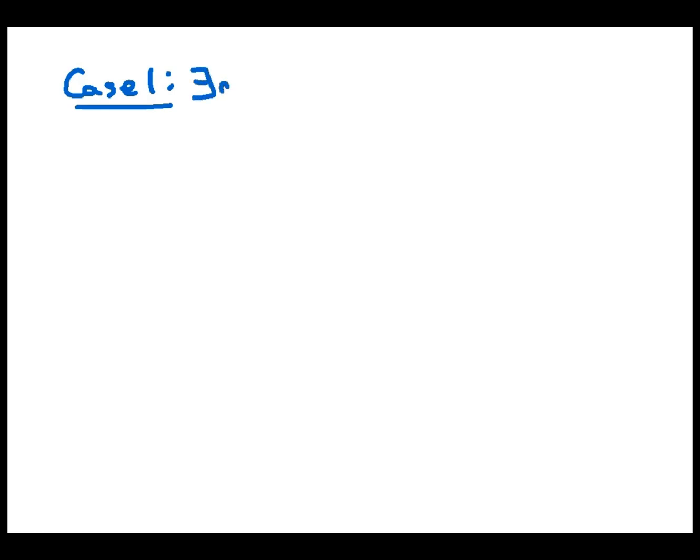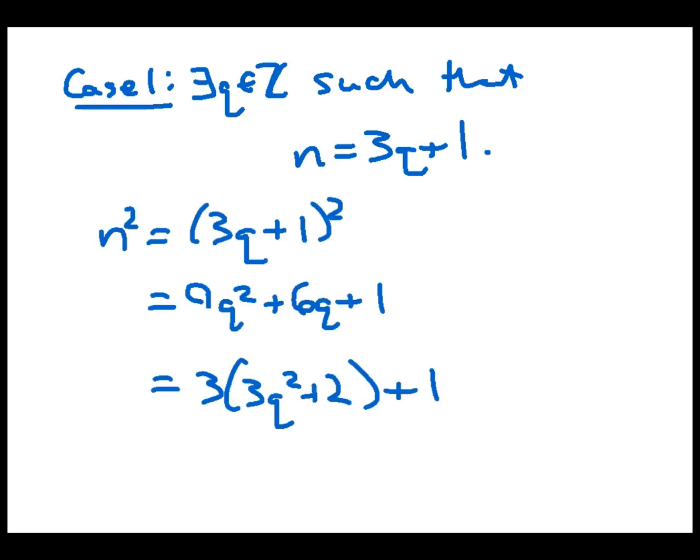So once we realize this fact, the proof actually goes quite quickly. Let's do case 1 first. So case 1 is where the remainder we get when we divide n by 3 is equal to 1. That means that there exists an integer q such that n is equal to 3q plus 1. So we want to show that n² is congruent to 1 mod 3. So let's get an expression for n² first. And there it is. By closure, the expression in parentheses is an integer. So n² minus 1 is 3 times an integer. And that means 3 divides n² minus 1, which in turn tells me that n² is congruent to 1 mod 3 in this case. So that finishes case 1.